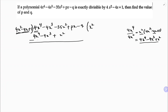Now subtract. Change the signs: plus, plus, minus. The 4x⁴ terms cancel and the minus 4x³ plus 4x³ also cancel. You are left with minus 35 minus 1, which gives minus 36x², plus px minus q.